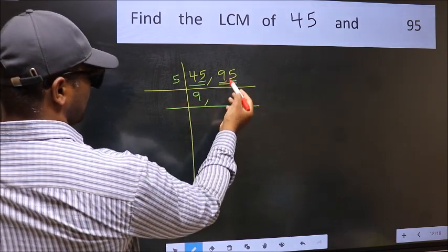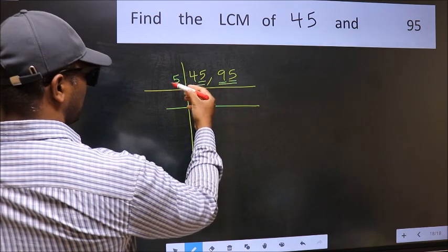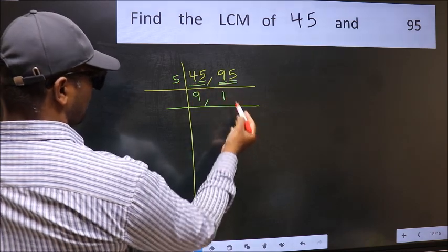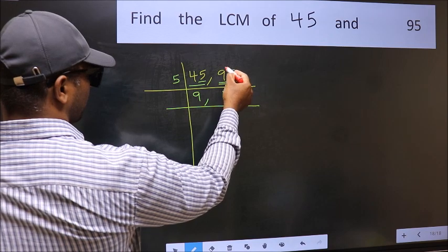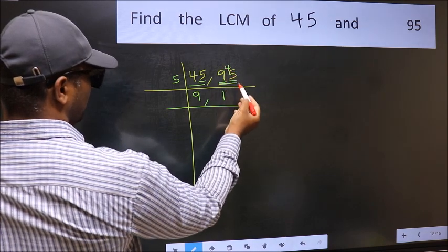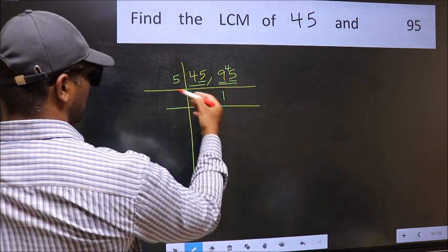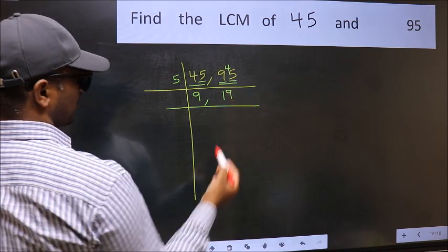The first result is 9. A number close to 9 in the 5 times table is 5 once 5. 9 minus 5 is 4, carried forward — 45. When do we get 45 in the 5 times table? 5 nines are 45. So dividing 95 by 5 gives 19.